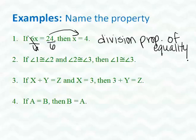Number 2, if angle 1 is congruent to angle 2 and angle 2 is congruent to angle 3, then I know that angle 1 is congruent to angle 3. This is an example of the last one that we just got through doing the previous slide, which was the transitive property.